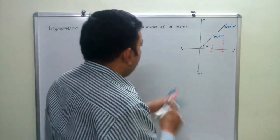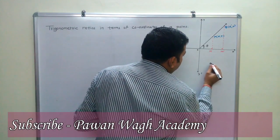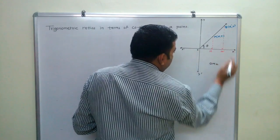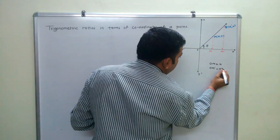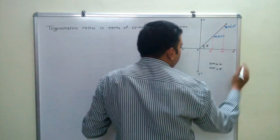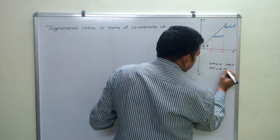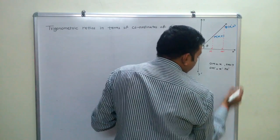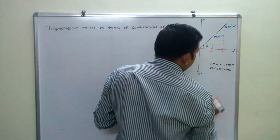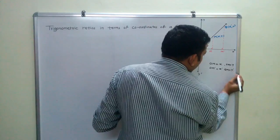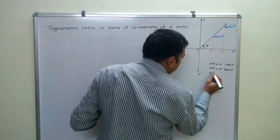This is the origin. The value of OM is x, and OM-dash is x-dash. PM is y, and QM-dash is y-dash. And suppose that OP is equal to R.